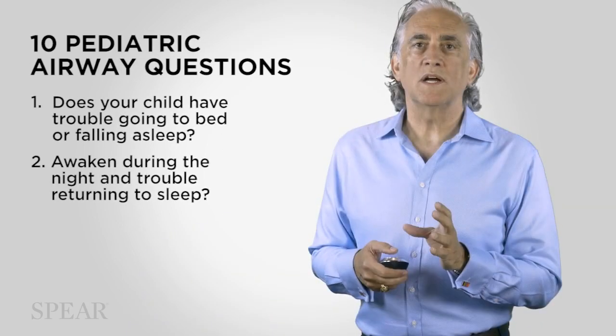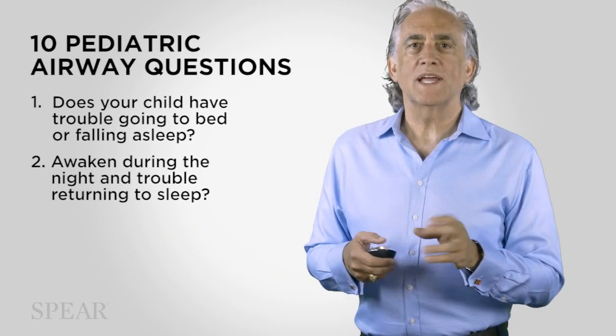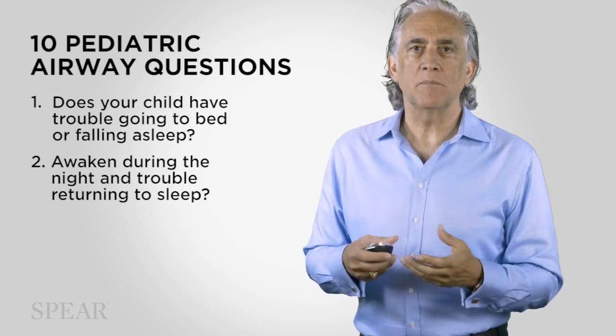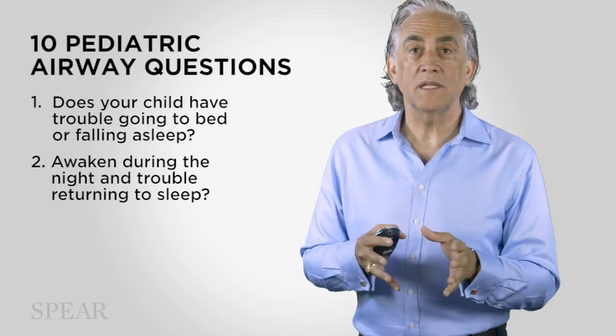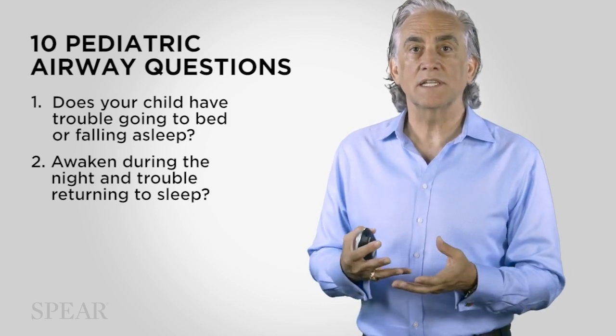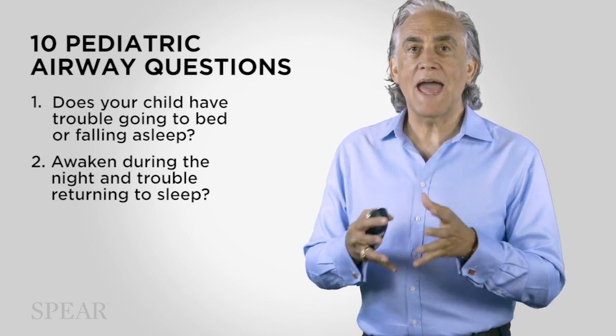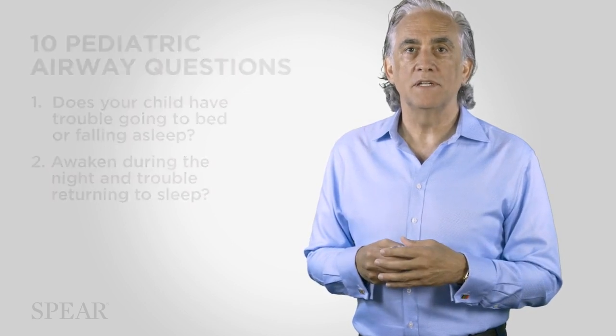Let's begin with the first two questions. The questions are grouped so that sections are trying to highlight certain activities that might be related to airway issues. The first two questions relate to how does this child sleep — can they go to sleep easily, do they stay asleep, or are they active in bed and moving around?